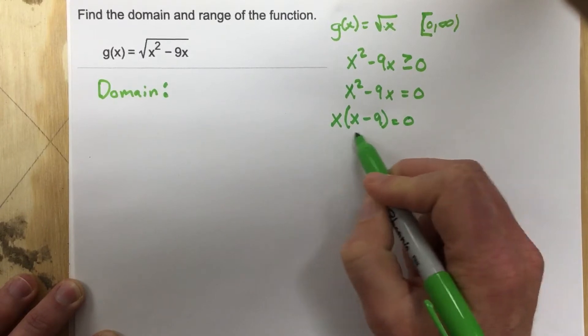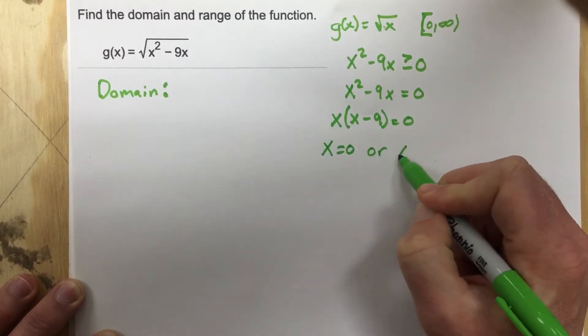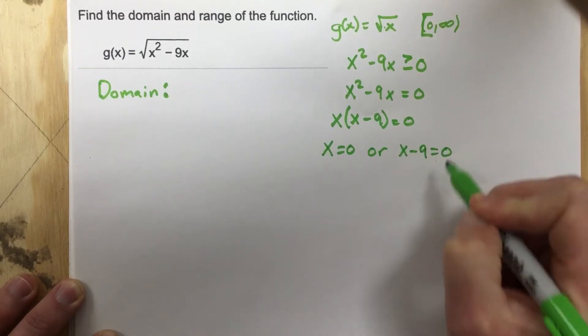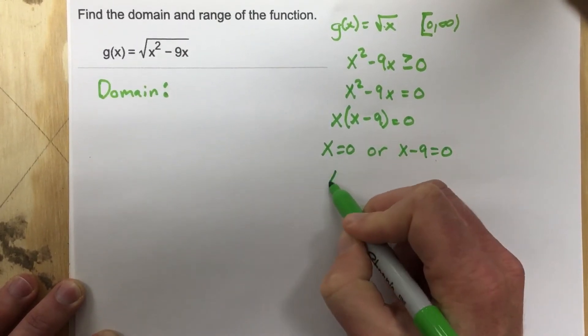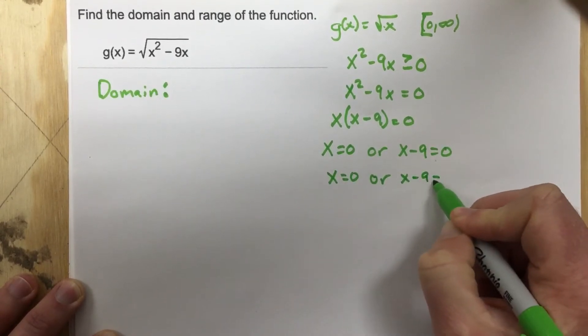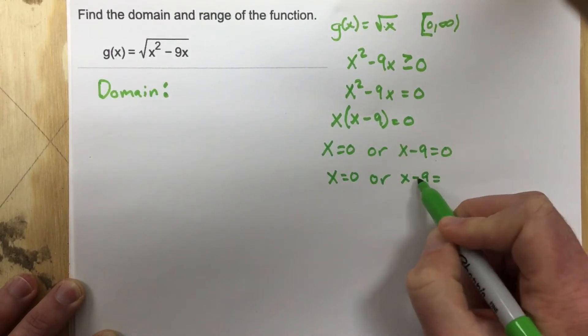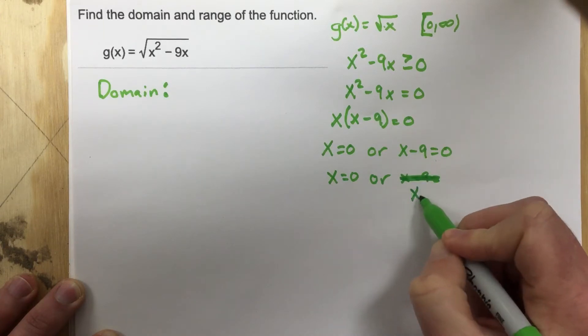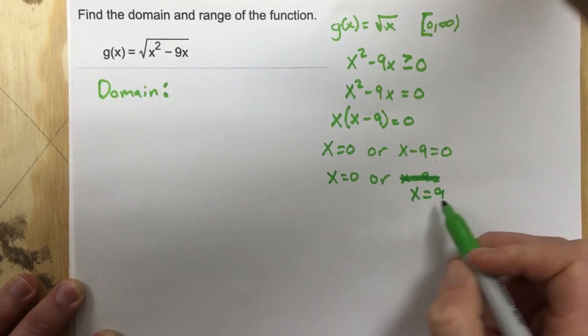And then we can say using the zero product property that x equals zero or x minus 9 equals zero. So x equals zero or, I should add the 9 over. When I add the 9 over, x equals 9. So my two roots are 0 and 9.